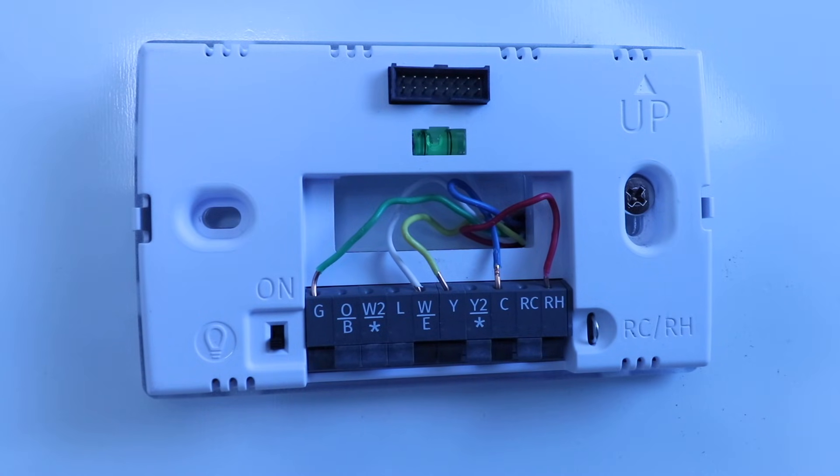If you don't have a C wire, how a smart thermostat will typically work is that it's kind of only charging whenever the thermostat is running. Like when you've got it running on air conditioning or heating, it closes the circuit. And then when that circuit is closed, your existing smart thermostat will be charging up with power.